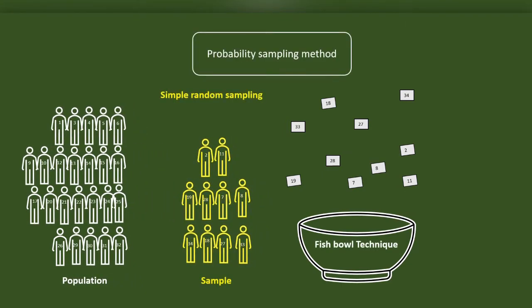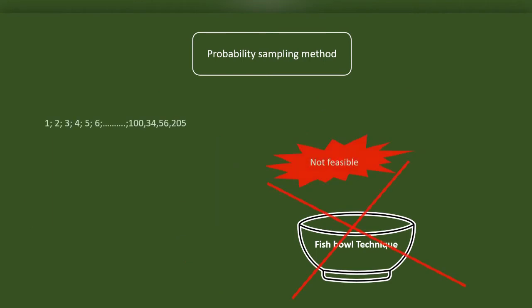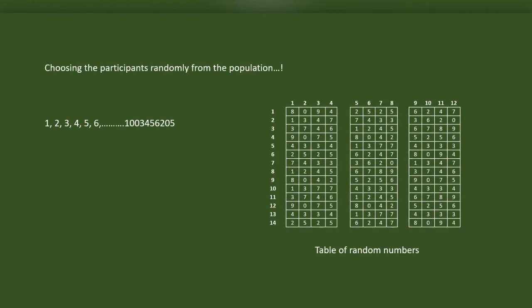However, this fish bowl method is not feasible if the population is large. In such situations, we will use the table of random numbers. The table of random numbers is a table with a lot of numbers. We can choose the participants based on the numbers one after the other, following a pre-developed pattern.